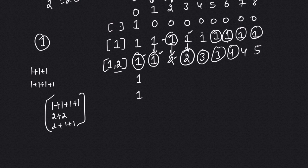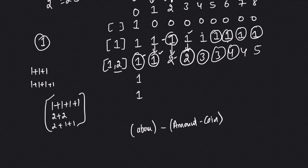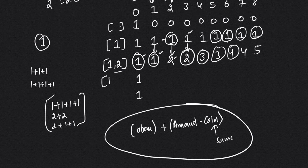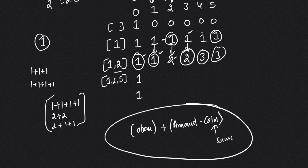I now have a formula: take the value from the above cell, and add the value at position (amount minus coin) in the same row, then add both. This gives the new number of combinations for a given amount. Now let's add coin of 5. We have coins 1, 2, and 5. We only need to look at amount 5, so let's erase the rest.